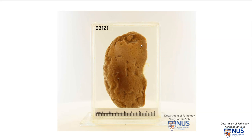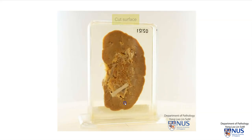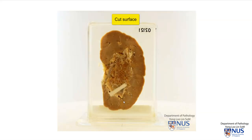Here is a specimen of a kidney. This specimen has been coronally bisected, so we're looking at the capsular surface here, and this is the cut surface.